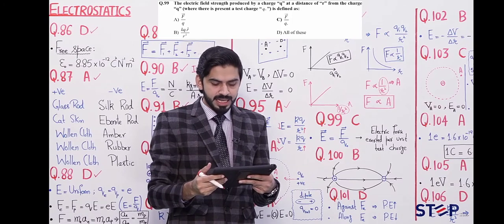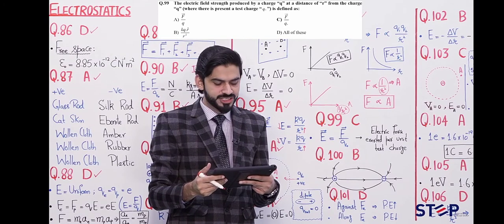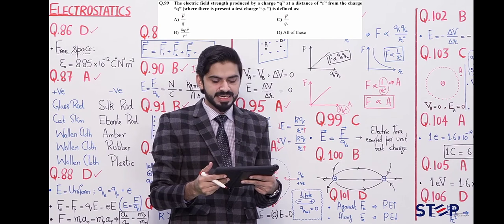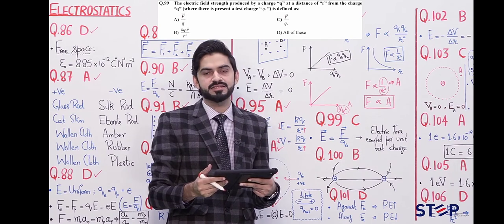The electric field strength produced by a charge q at a distance r from the charge, where a test charge q₀ is present, is defined as...